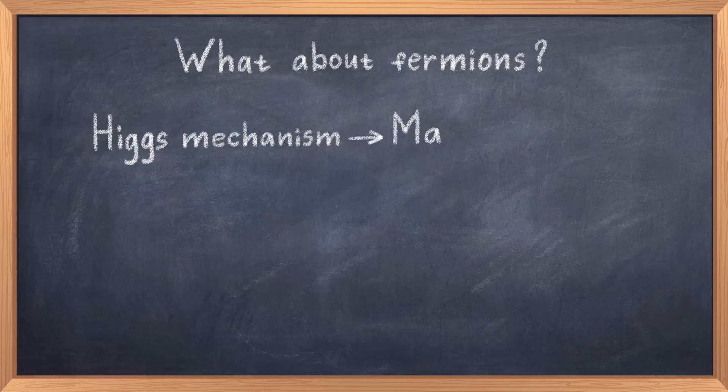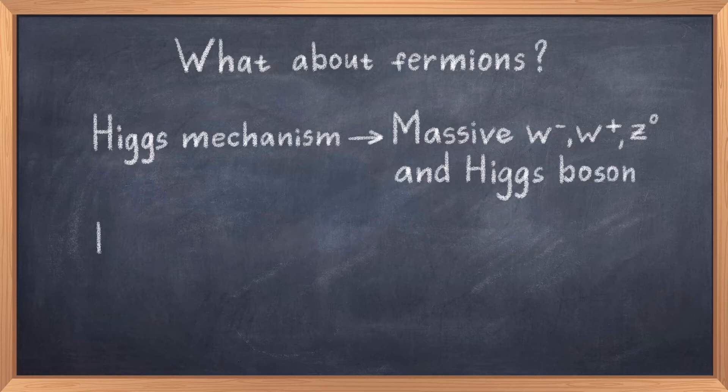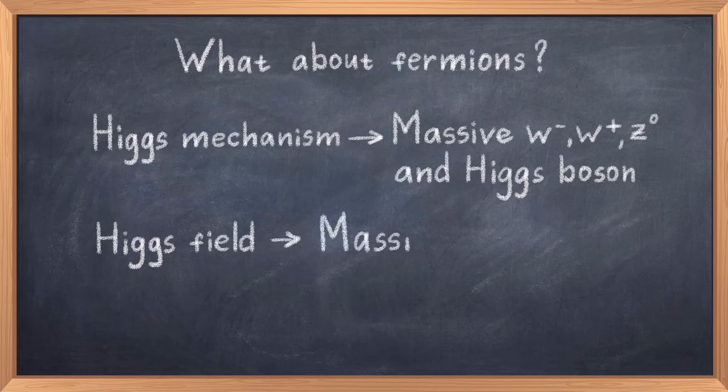Technically, the quarks are bound to each other via the strong force, so their mass is not so important. What would be the big issue is if the electron was massless, because then it would have a big impact on atoms, and they wouldn't exist as we know them. The reason why these particles all have masses is due to their interaction with the Higgs field.